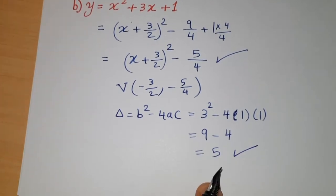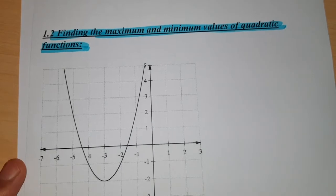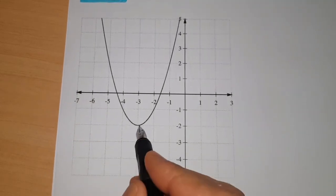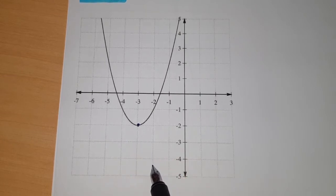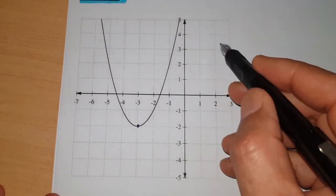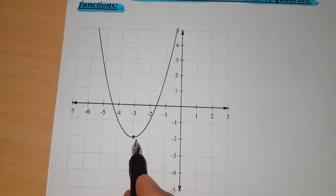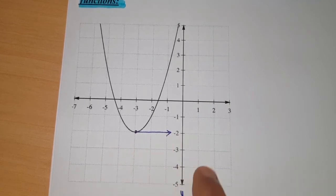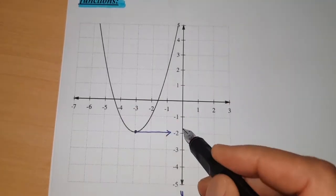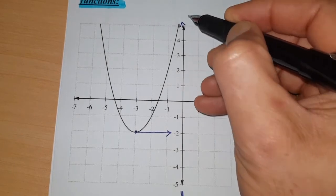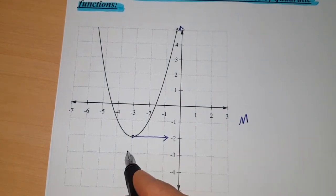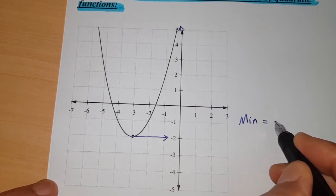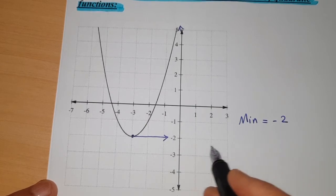The next part of the lesson covers finding maximum and minimum values of a quadratic function. Once you draw the quadratic function or assign the vertex from the canonical form, you can identify the minimum and maximum values. The minimum and maximum values are calculated on the y-axis. For an upward-opening parabola, the minimum value is the y-coordinate of the vertex, for example -2.